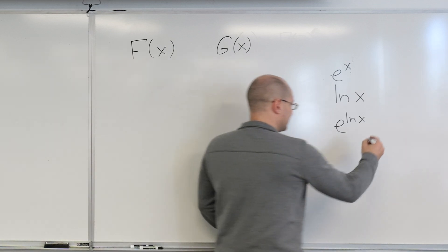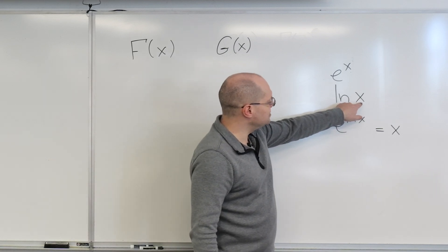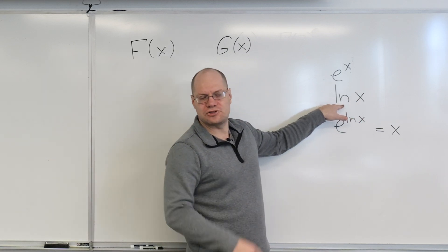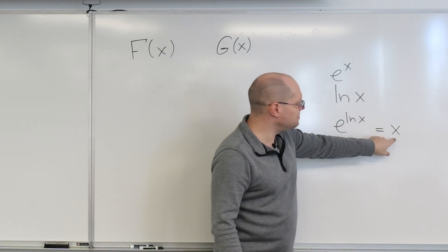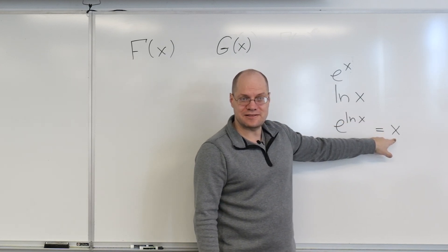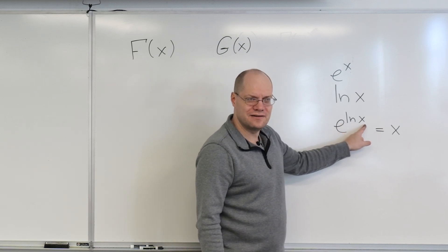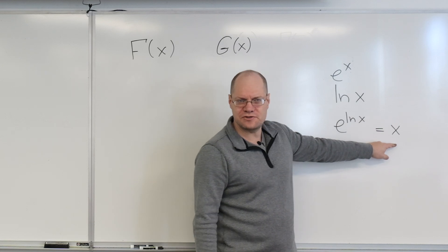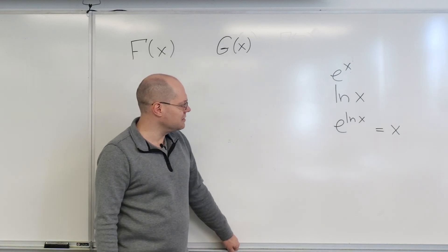The way I think about it is that this function sends x to natural log of x, and then this function sends it back to x. Does that make sense? So if you start with 7 and you evaluate log of 7, then e to the log of 7 gives you 7 back. So it takes you back. That's how I think about the inverses.